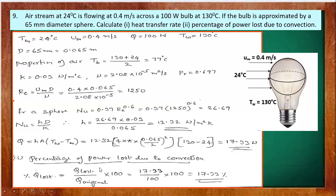The percentage power loss = (Q_loss / actual wattage) × 100 = (17.33 / 100) × 100 = 17.33%. So 17.33% of power is lost due to convection.